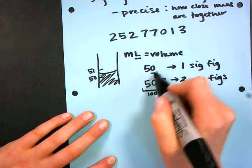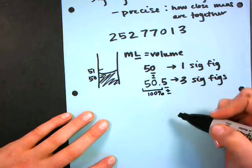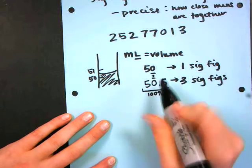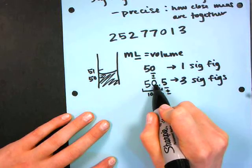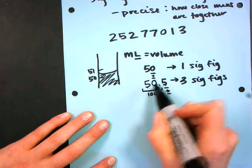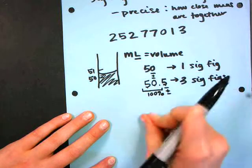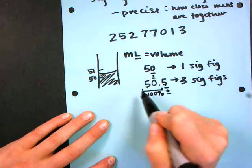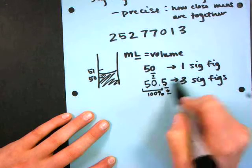So up here this zero was my plus or minus, but now my zero is locked in by my five. So I have a zero between two non-zero digits, it becomes significant because I know that I have at least 50 milliliters and now I'm saying I'm not sure about this third number.